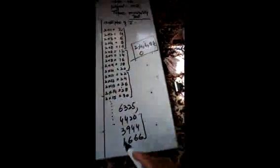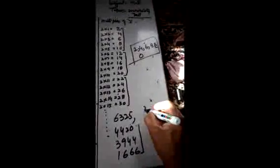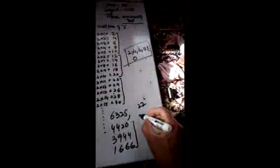We see that some numbers here end with these digits: 4420 ends with zero, 3944 ends with four, 1666 ends with six, 2022 ends with two, and 28 ends with eight. All these numbers which have two, four, six, eight, or zero at their unit place are divisible by two.